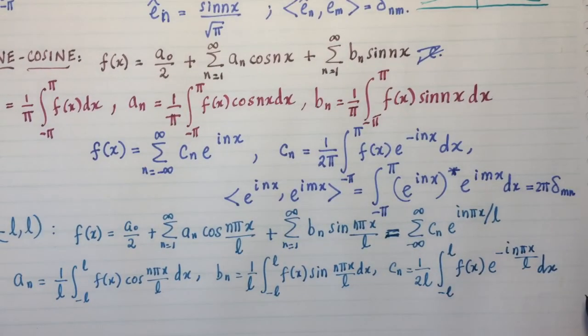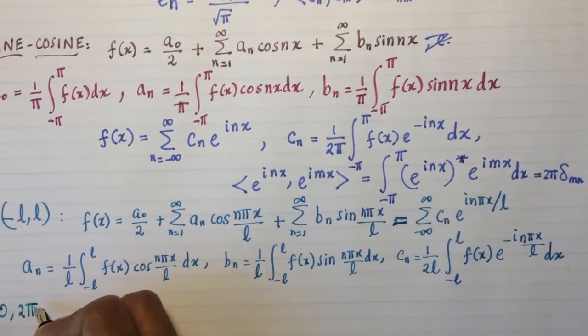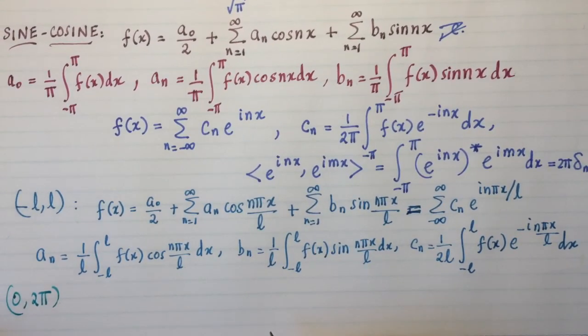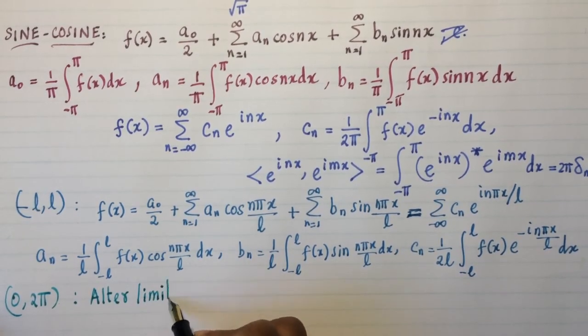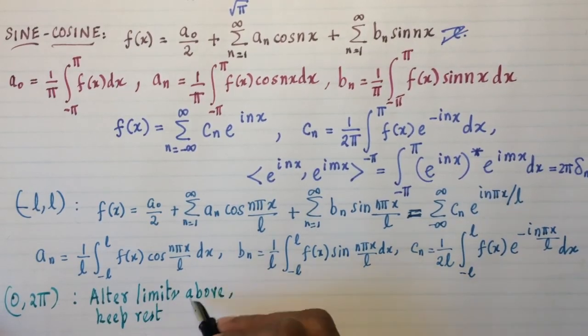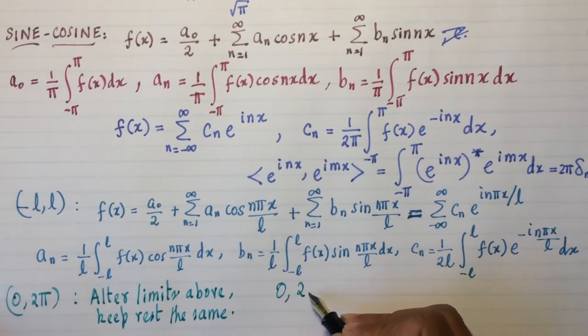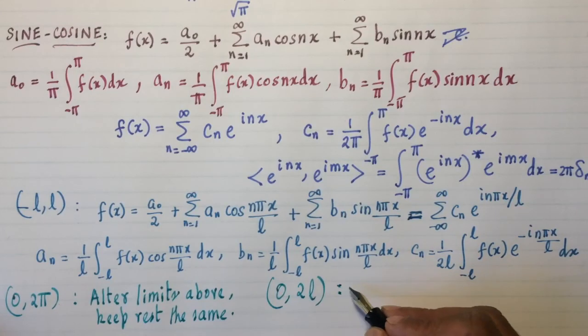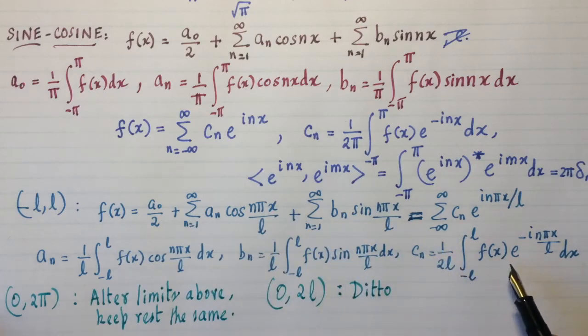Now what if you don't have an interval that's sitting pretty, symmetric in both directions, but rather, you have an interval like this. What if you had 0 to 2π instead? Well, what we do here is, here we just alter the limits. Above, keep, rest the same. Amazingly enough this procedure is sufficient to deal with this term. Similarly, if you had 0 to 2L, then do the same thing, except you're dealing with these formulas for 0 to 2L, and everything remains the same.